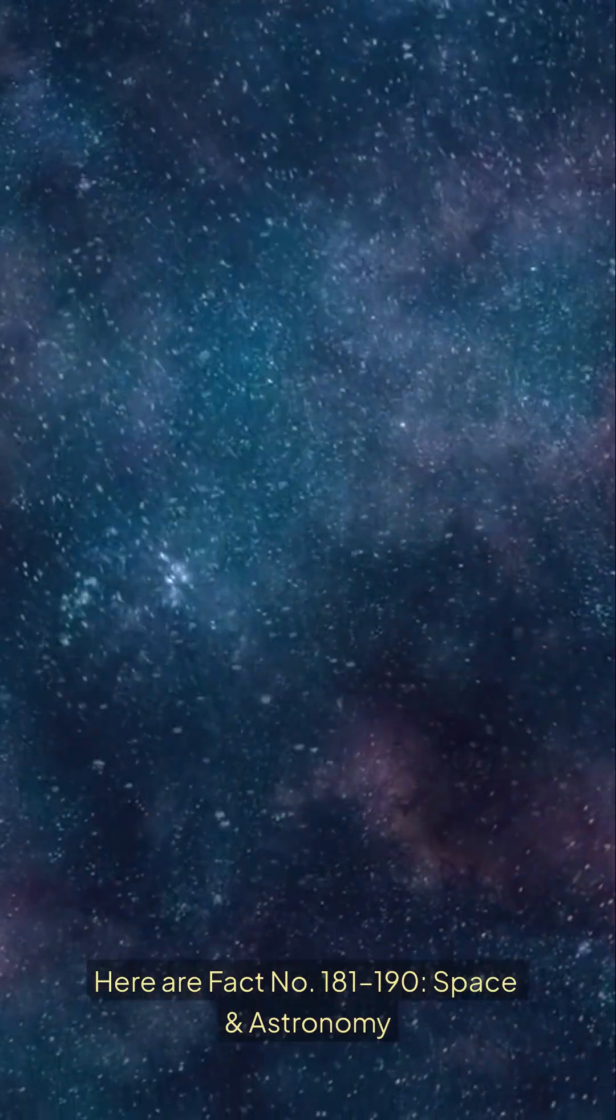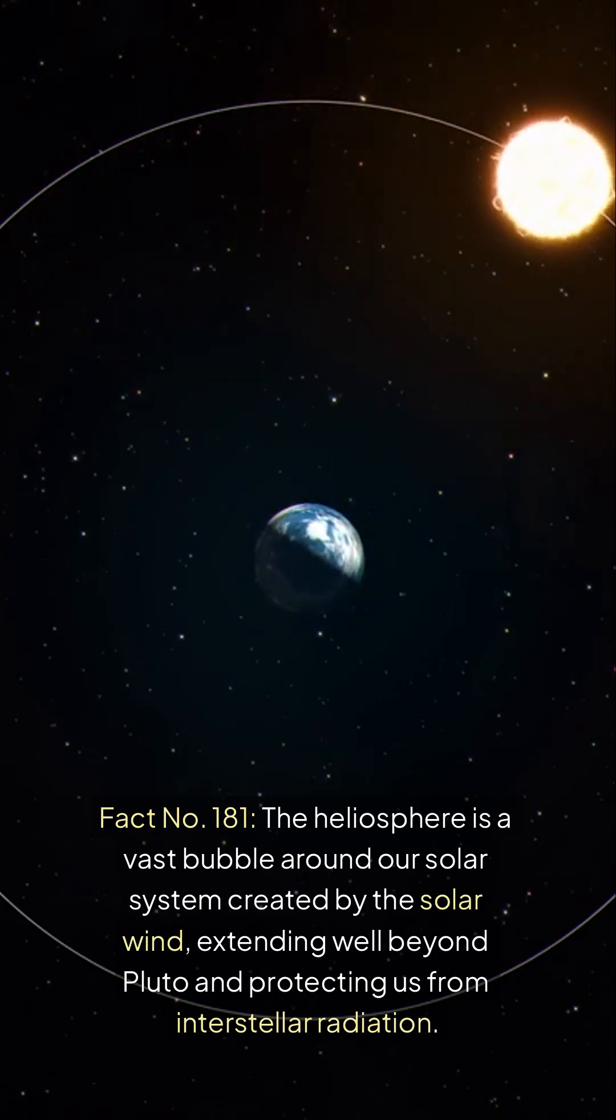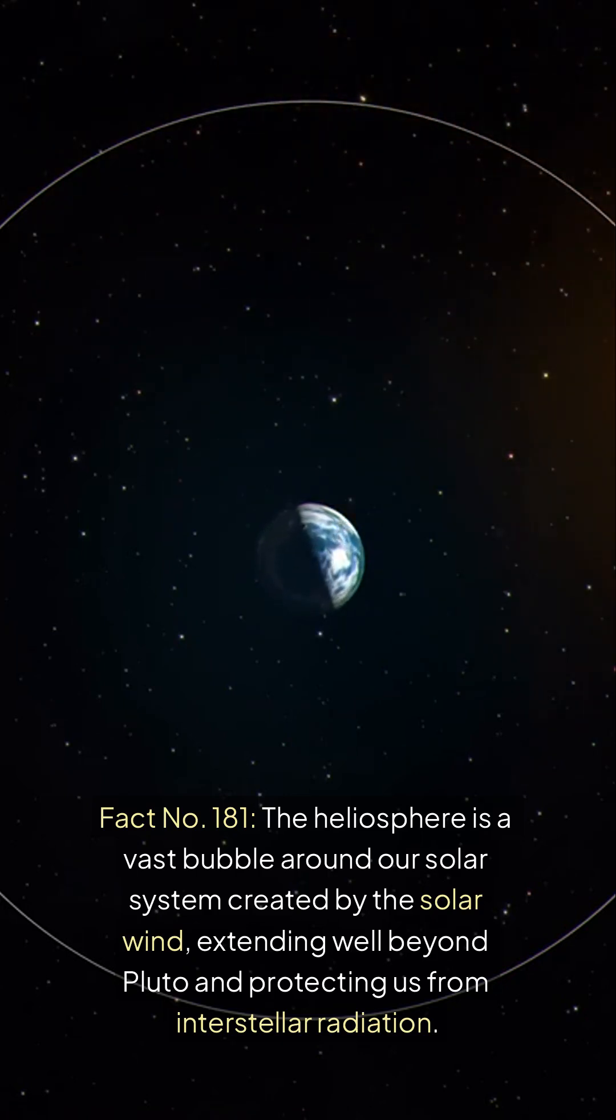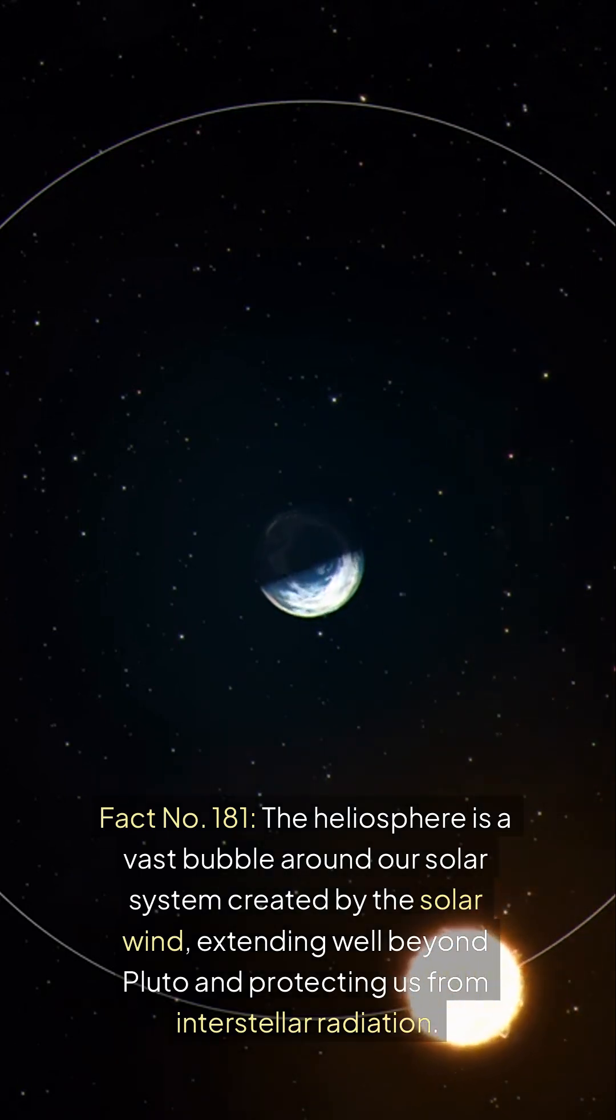Here are fact number 181 to 190, space and astronomy. Fact number 181, the heliosphere is a vast bubble around our solar system created by the solar wind, extending well beyond Pluto and protecting us from interstellar radiation.